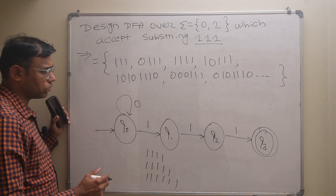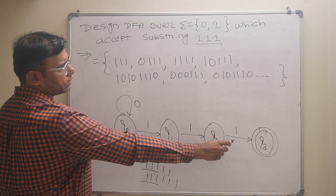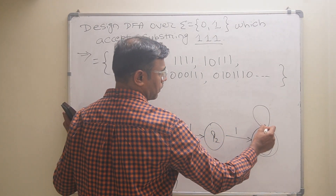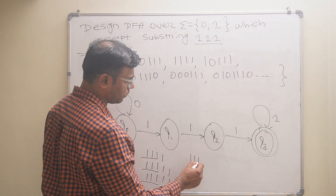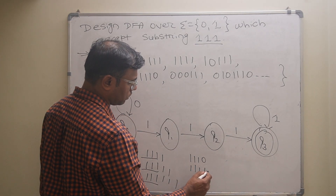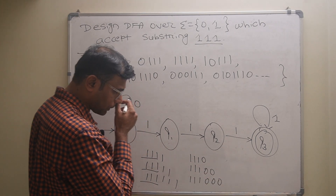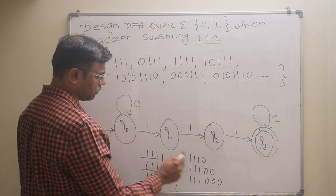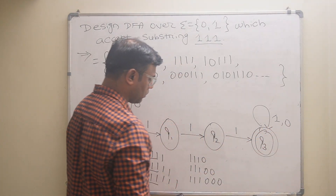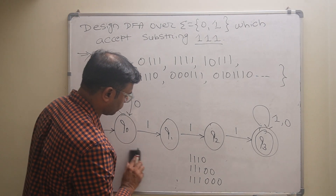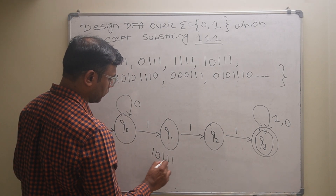For strings with four, five, or six consecutive ones — like 1111, 11111 — these all contain 111 as a substring. After reaching q3, the DFA should also accept any number of zeros or ones. So I apply a self-loop of zero on q3, accepting strings like 1110, 11100, and so on.